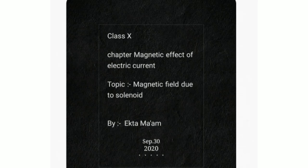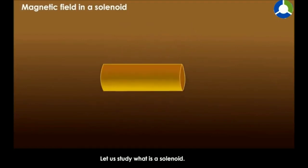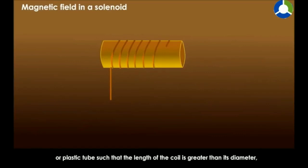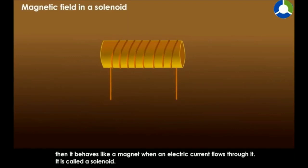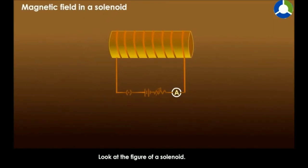In this part we are going to learn about magnetic field due to a solenoid — how magnetic field is produced with the help of a solenoid. A solenoid is basically an insulated material over which we wind a conducting wire. Here you can see we have taken a cardboard and wound wire over it to make a solenoid. When current starts flowing through it, it produces a magnetic field.